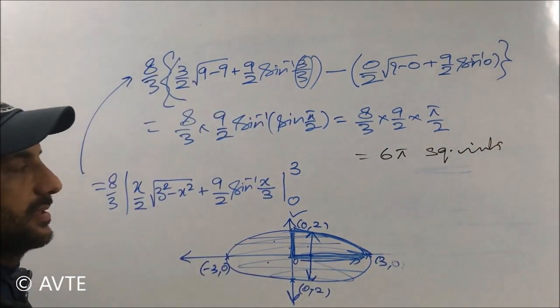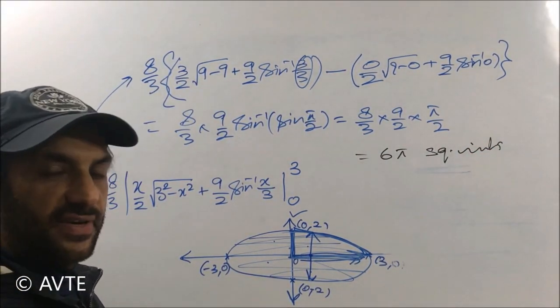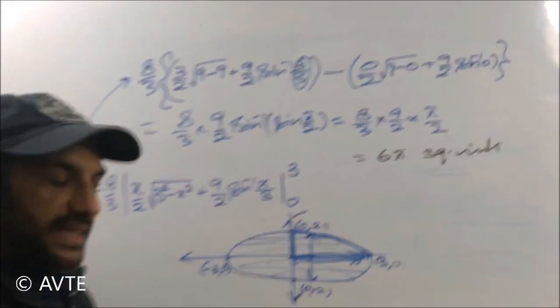And the answer is coming as 6 pi square units. Is there any method with which we can cross verify, we can check the answer? Yes, there is a method.